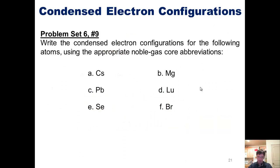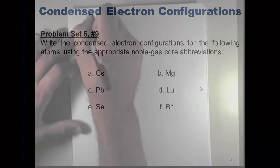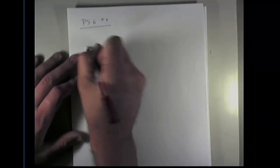So let's do a problem. Question number 9 from problem set 6. I want you to write the condensed electron configurations for the following atoms using the appropriate noble gas core abbreviations. For problem set 6, question 9, we are asked to write a condensed electron configuration for the atoms listed. Now I'm going to not do all of those. So I'll just pick one at random. I'll pick selenium, letter E.